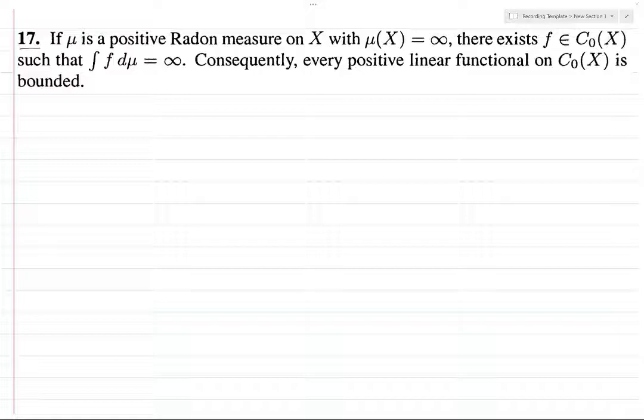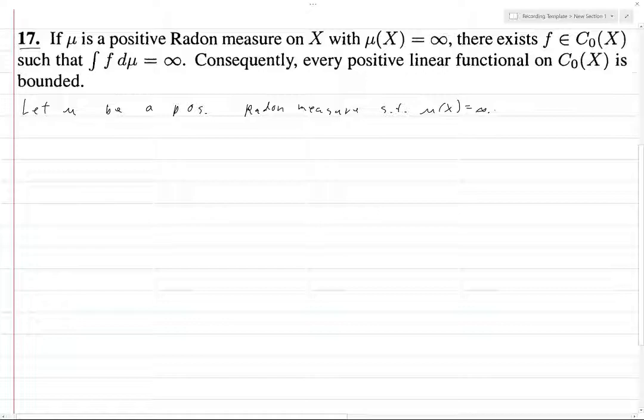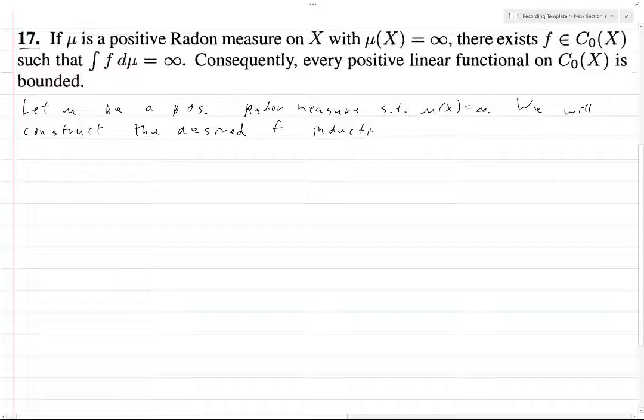Alright, 7.17. There's a lot of stuff to do in this problem, so let's get to it. Hopefully I'll be able to go through a lot of the details fairly quickly. Let μ be a positive Radon measure such that μ(X) is infinite. You will construct the desired function f inductively.